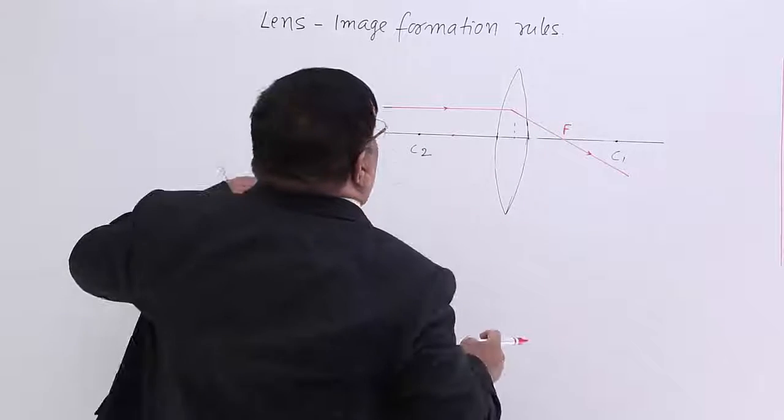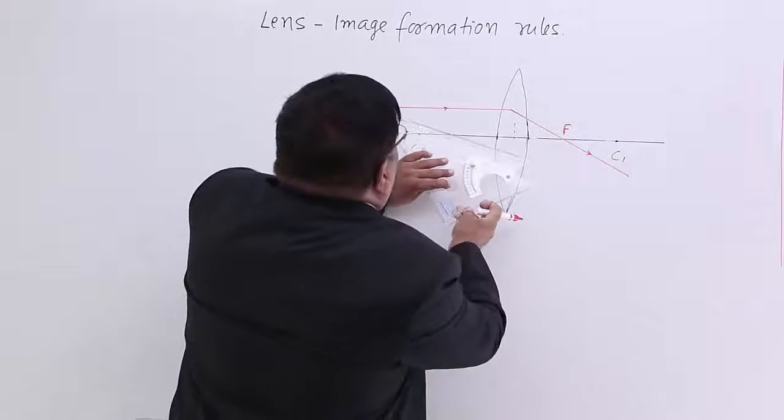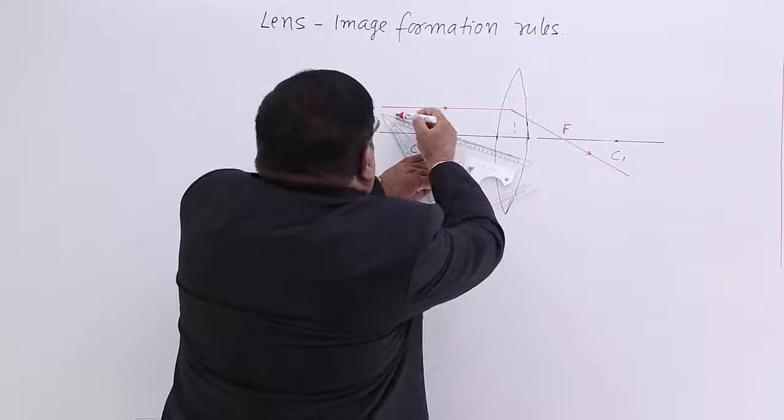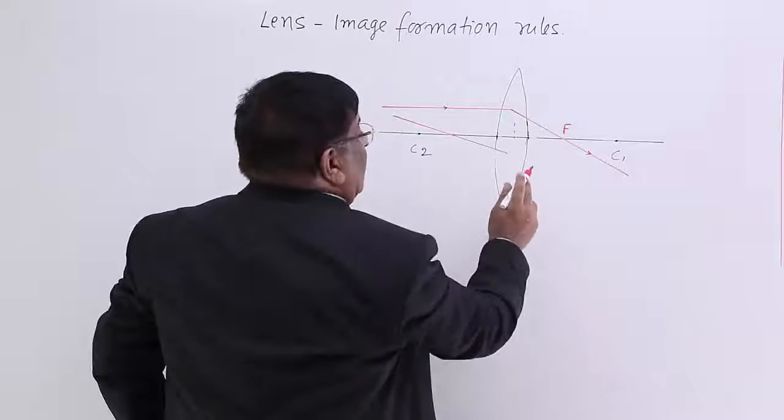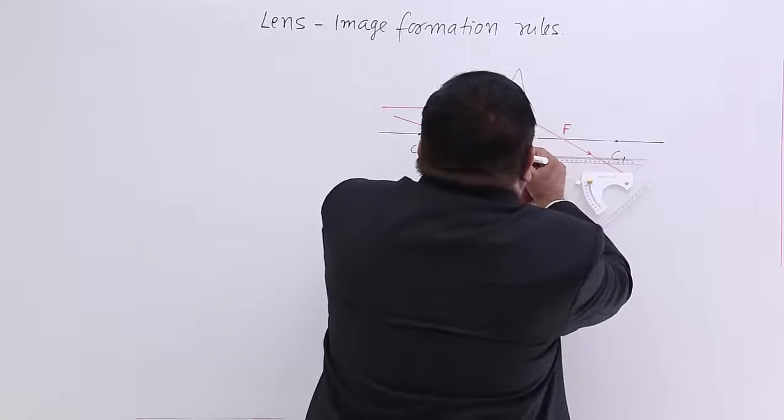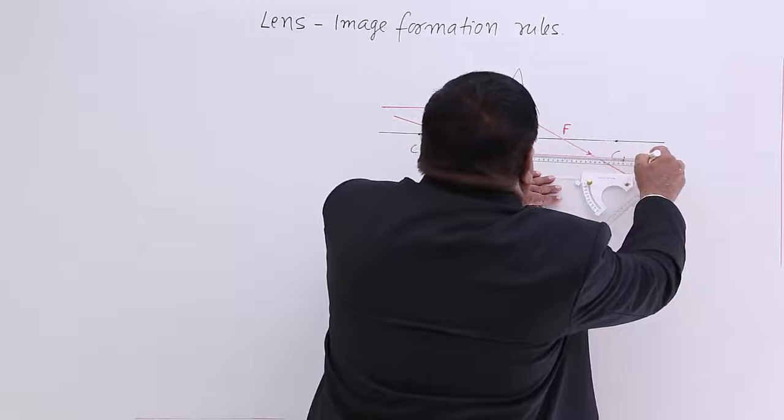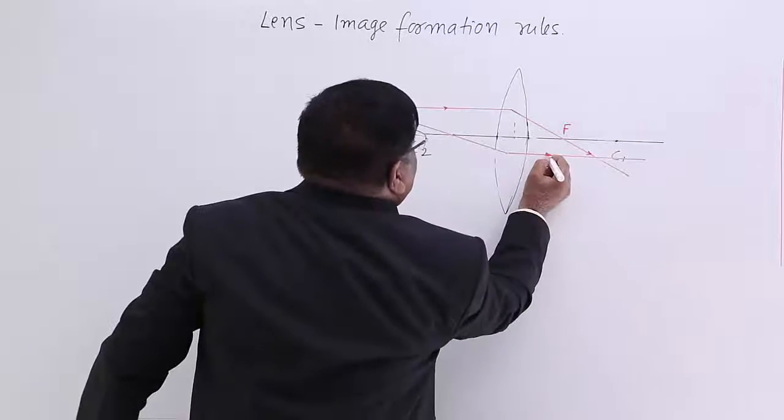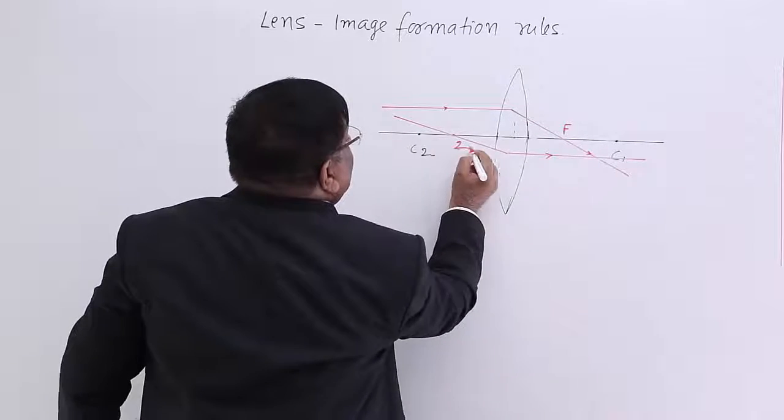Now any ray which is coming from the direction of focus will become parallel. After refraction this will become parallel to principal axis. This is number 2.